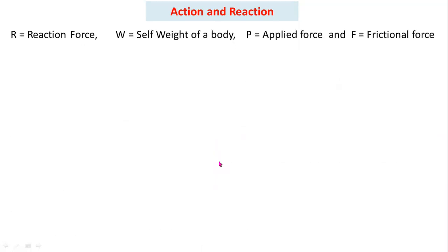Before going to the problems, you have to know the fundamentals about free body diagrams. Capital R is the normal reaction force. W is the self-weight of a block. P is the externally applied force. F is the frictional force — F equal to mu R, where mu is the coefficient of friction.